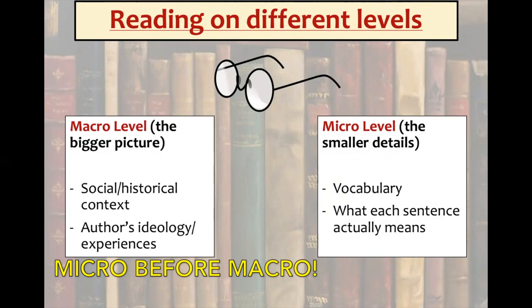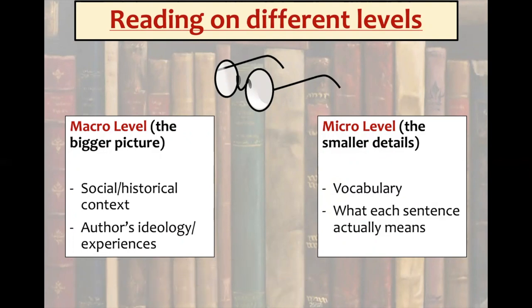But we can only really do the macro level reading if we've got the micro level down. The micro level is often where we have to start, especially when looking at a foreign language novel or text, because there's always going to be pieces of vocabulary that we struggle with and the syntax is often different. So the micro level - we're talking about the smaller details: can you piece together the words in front of you, the grammar in front of you, in order to make sense of the sentences, before building up that general understanding, which can then lead to the macro level of reading.